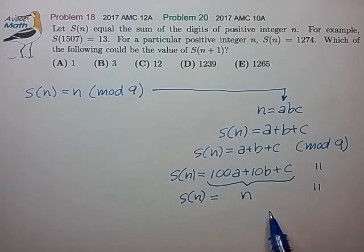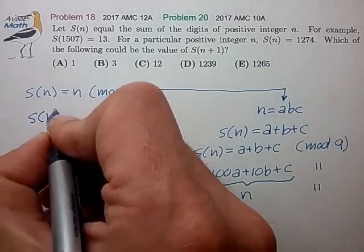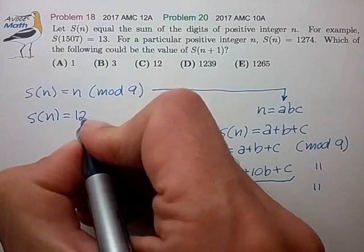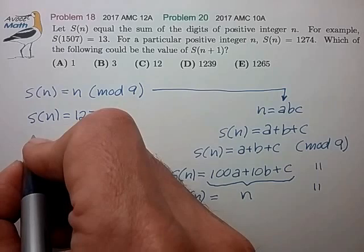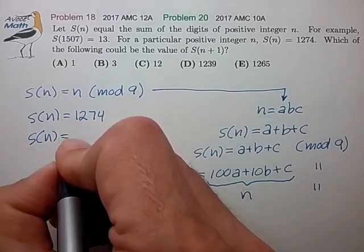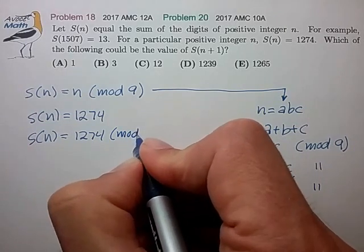So with this relationship we can very quickly work through this problem because from the problem statement we know that S(n) is equal to 1274. So let's analyze this in mod 9.